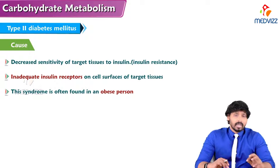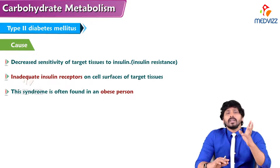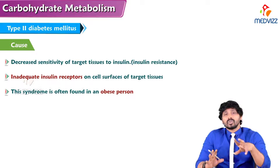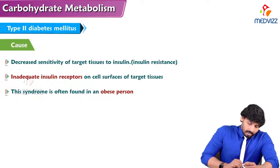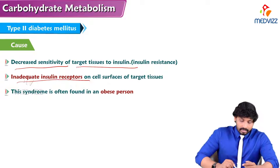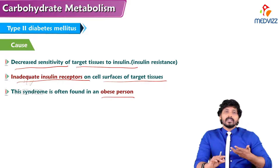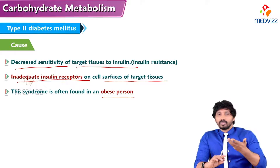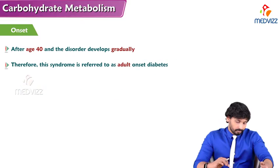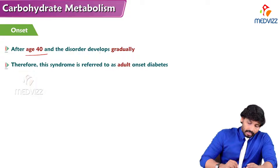For Type 2 diabetes mellitus, unlike Type 1, there is little or sufficient insulin present, but tissues stop responding to it. The main issue is decreased sensitivity of target tissues to insulin, leading to insulin resistance, due to inadequate insulin receptors on the cell surface. This syndrome is often found in obese persons, where the fatty layer covering skeletal muscles contributes to insulin resistance. Onset is typically after age 40.